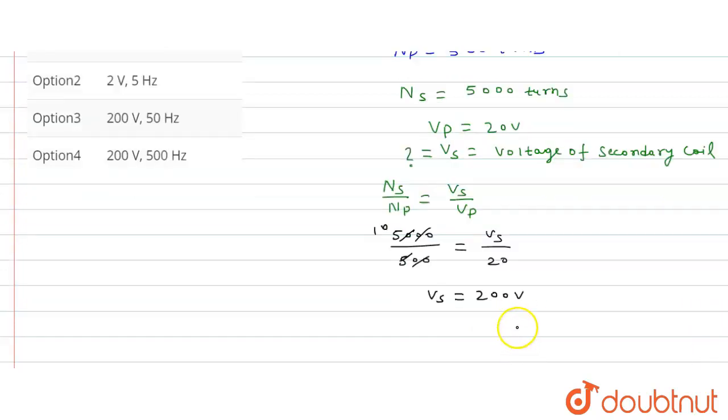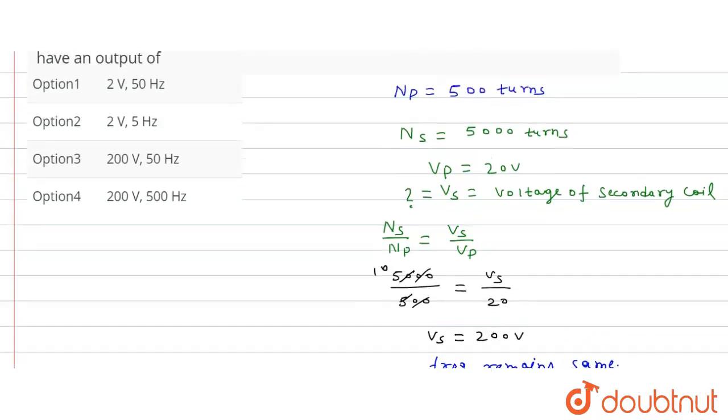So frequency, VS will be 200 volt and frequency remains the same. Therefore the secondary winding will have an output VS is equal to 200 volt and frequency remain same.